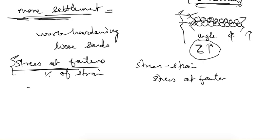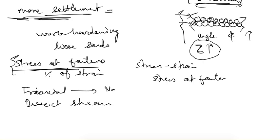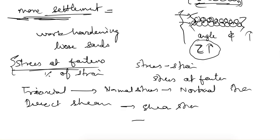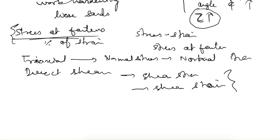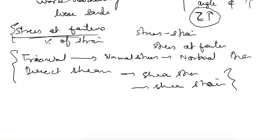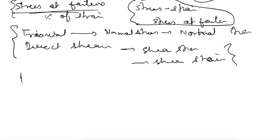For this stress-strain analysis, triaxial or direct shear tests can be conducted. In the triaxial test, we measure normal stress and normal strain and plot these two. In the direct shear test, we plot shear stress and shear strain. This is how we find the stress at failure. The next question — the failure plane — will be addressed in the next lecture.